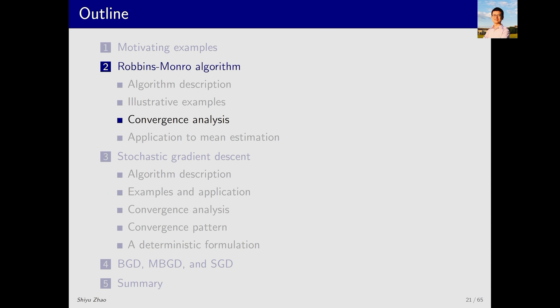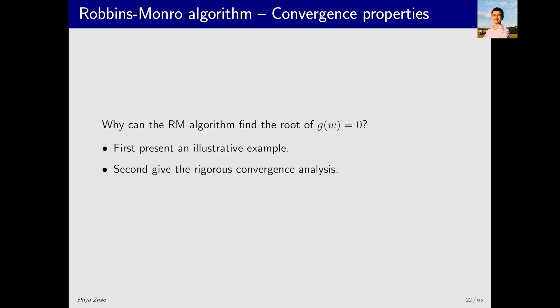Earlier, we saw through an example that RM can find the solution. Now, let us analyze why it can find this solution. That is to analyze the convergence of the RM algorithm. To do that, we will present two parts. In the first part, we will give another illustrative example to show why it converges, providing an intuitive explanation. In the second part, we will give a rigorous convergence analysis.